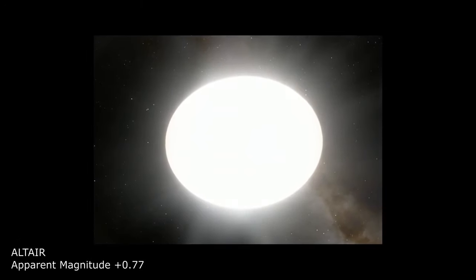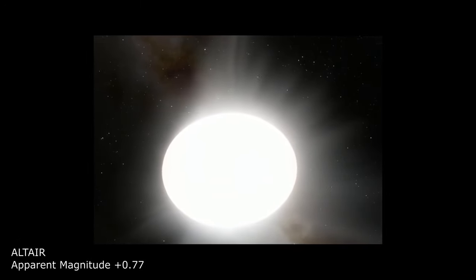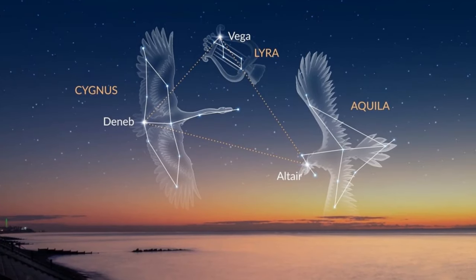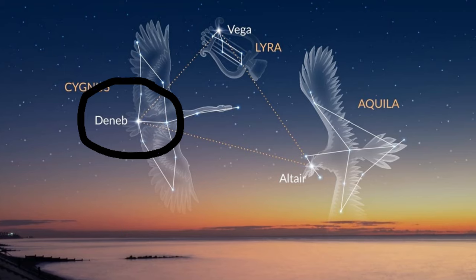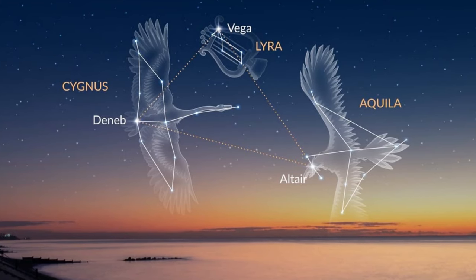With an apparent visual magnitude of plus 0.77, Altair is one of the vertices of the Summer Triangle asterism, with the other two marked by white supergiant Deneb and fellow A-class main sequence star Vega.